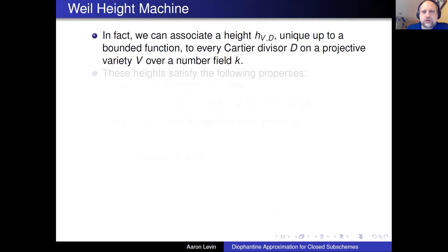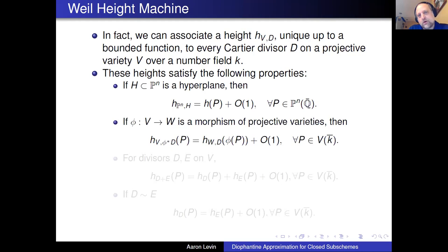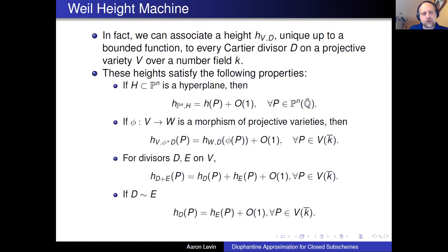More generally, there's a machinery to associate a height to a divisor on a projective variety, and the height satisfies certain nice properties. The height we've been talking about on projective space is just the height with respect to a hyperplane; in fact for any hyperplane you get the same thing up to a bounded function. It satisfies functoriality: if you take the height with respect to a divisor and have a morphism relating the varieties, the height with respect to the pullback is related to the height with respect to the divisor. It satisfies a nice linearity property, and these first three properties already determine the whole theory. Moreover, it's preserved under linear equivalence of divisors — equivalently, you can attach a height to line bundles. These are the nice properties of the classical Weil height machine.